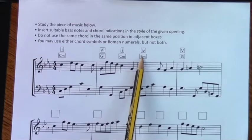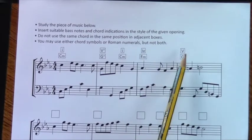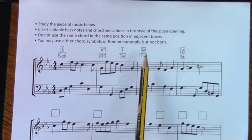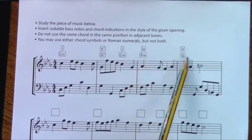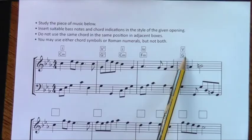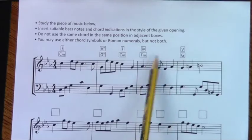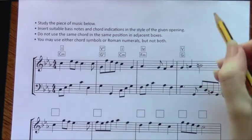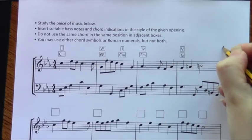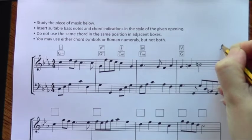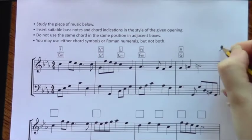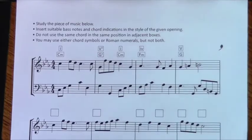You can see here we have chord four done for us going to chord five, and you'll notice that is a cadence — four to five — an imperfect cadence. So we draw a cadence point here. This is our phrase mark.